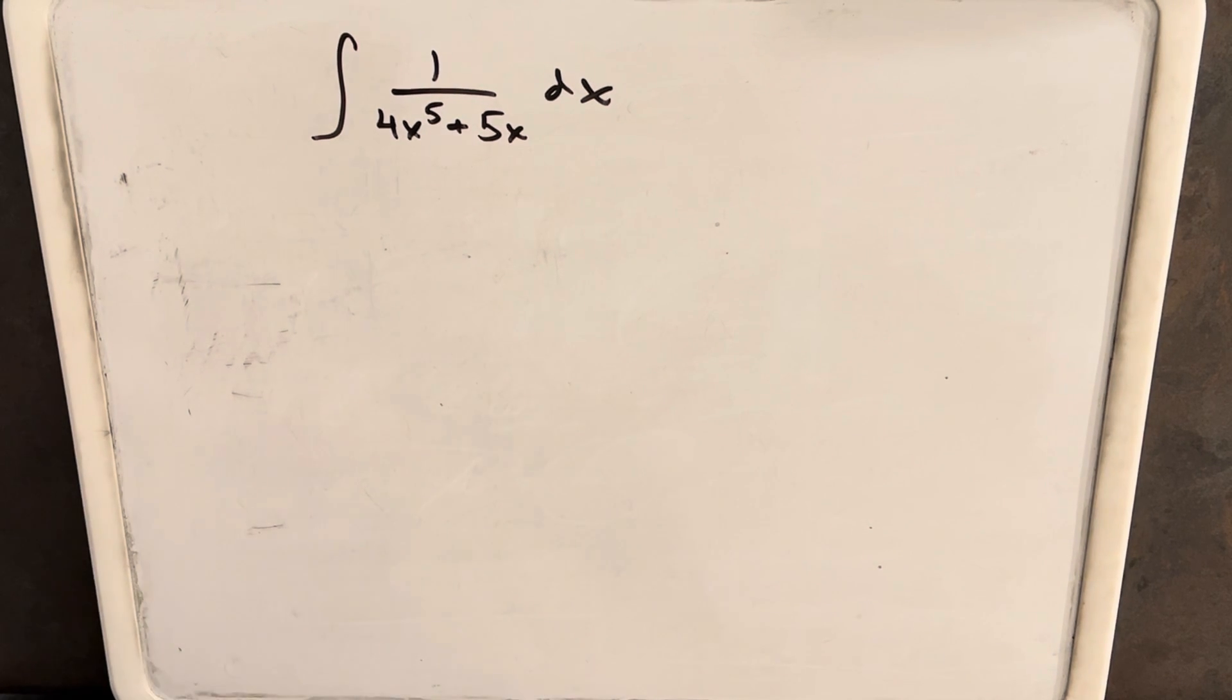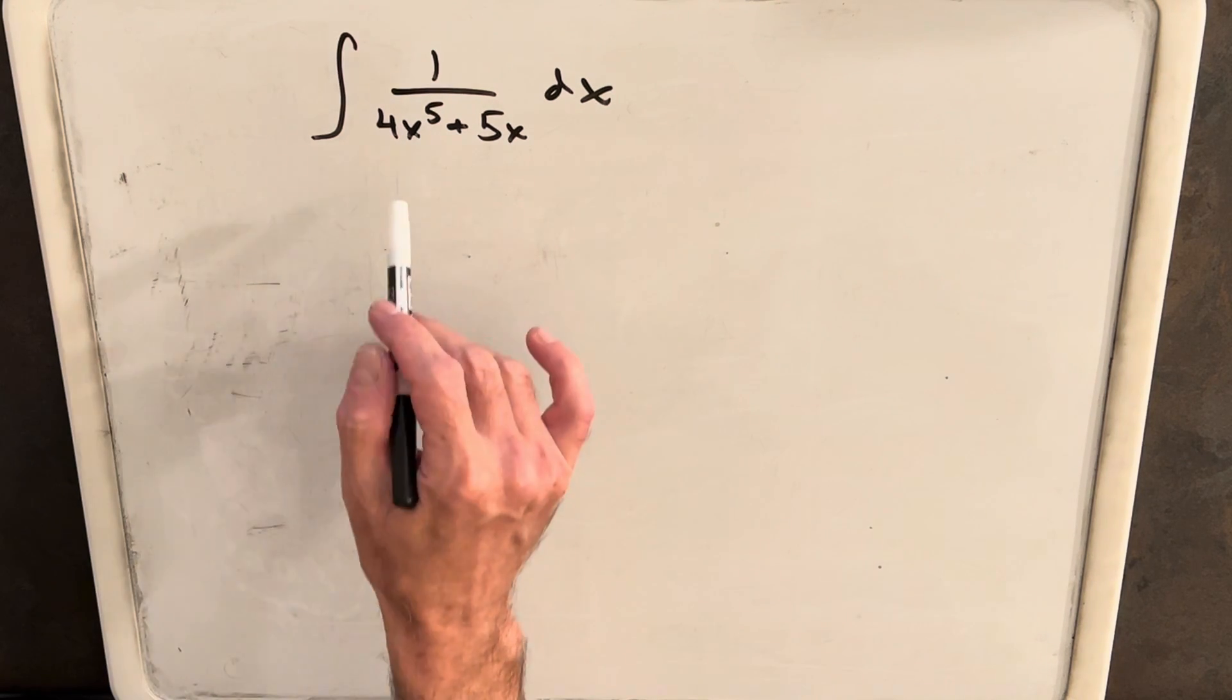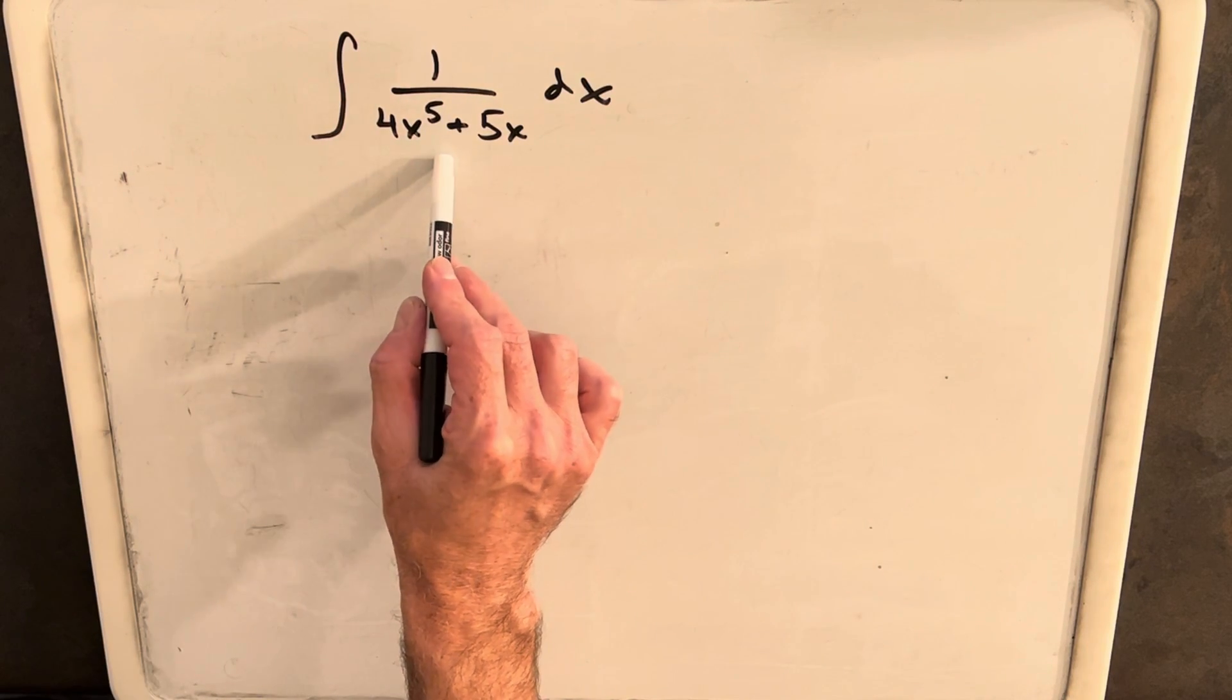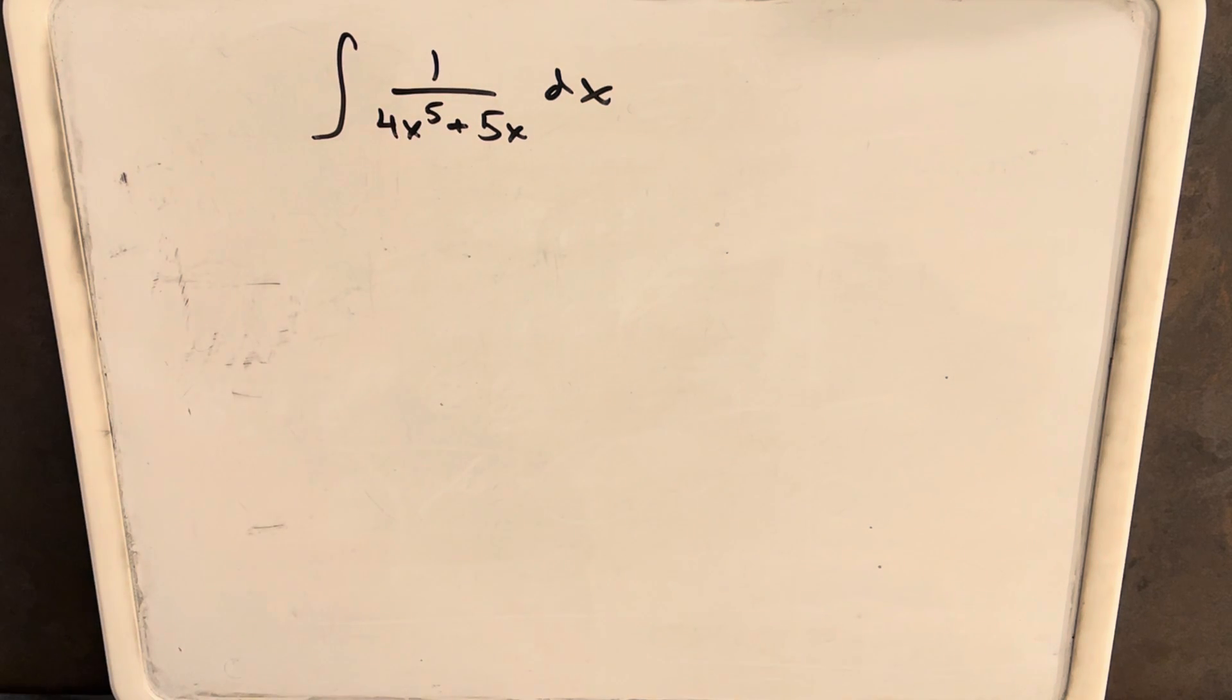The thing I found interesting when I saw this this morning was I don't have an obvious way to approach it. I can't, there's not an obvious u substitution because I've got nothing in the numerator to use.